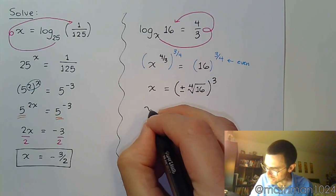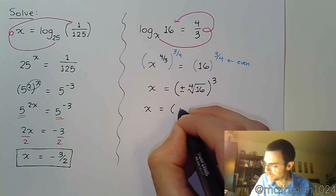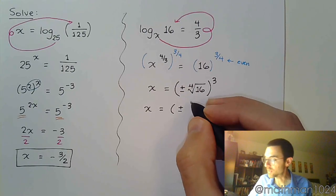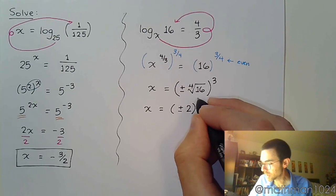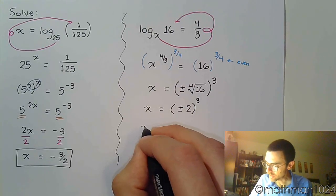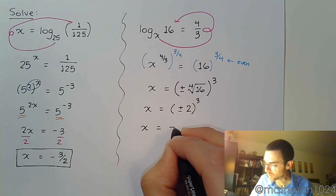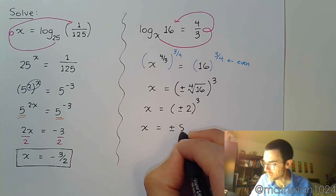Let's work this out. x equals plus or minus—the 4th root of 16 is 2, raised to the 3rd. So x equals plus or minus 8. There's a problem here.